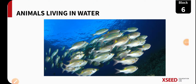Namaste children, welcome back to another session of Block 6. In LP1 we completed different habitats of animals and based on that we classified animals into terrestrial animals, aerial animals, and arboreal animals. In LP2 we came to know about the adaptations in animals in extreme habitats like desert habitat, mountain regions, and polar regions.